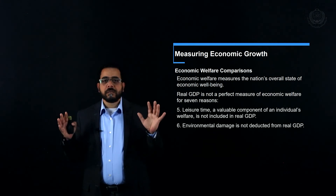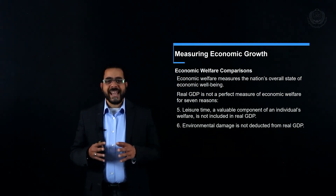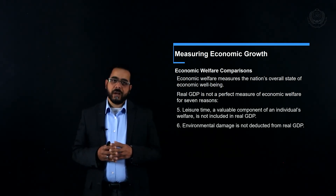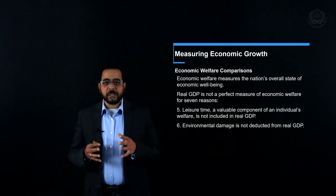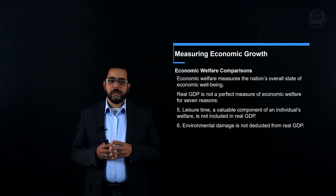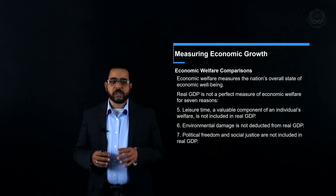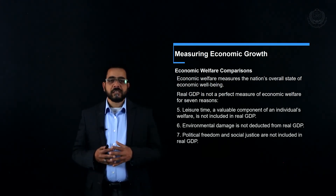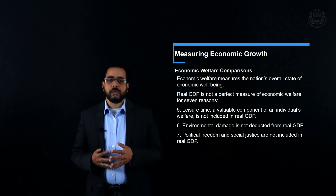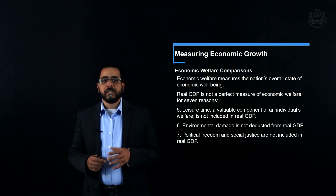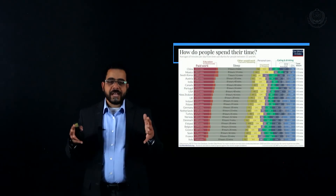The sixth defect is environmental damage. Economic growth can come at the expense of the environment. We've seen in China that great economic expansion sometimes came at the expense of the environment. GDP may increase while not reflecting the environmental damage caused. Our author also notes that political freedom and social justice are not calculated in GDP, so it is not a perfect measure of our standards of living.